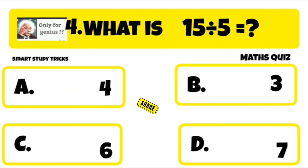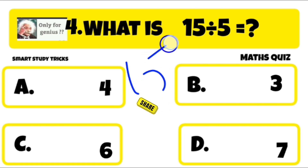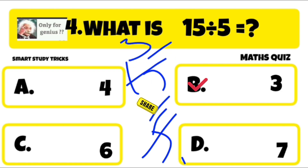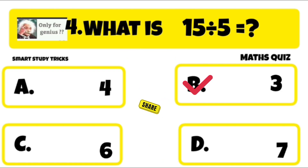Quiz number 4 is: what is 15 divided by 5? 15 divided by 5 is equal to 3. Right answer is B: 3.